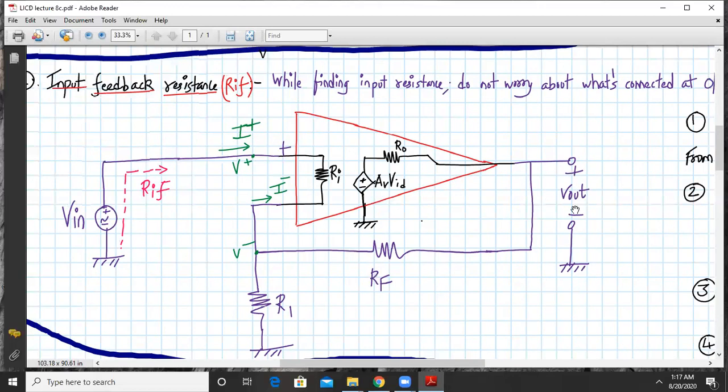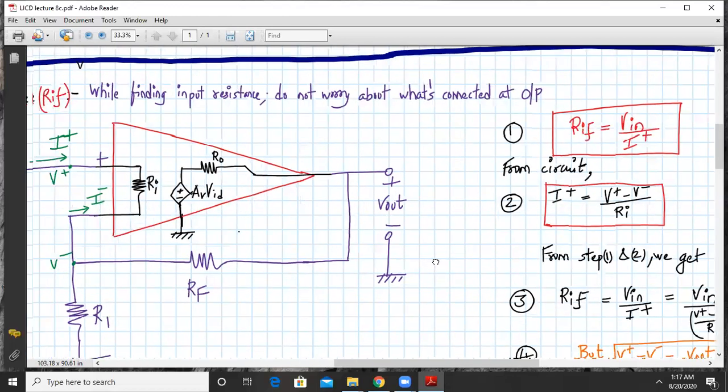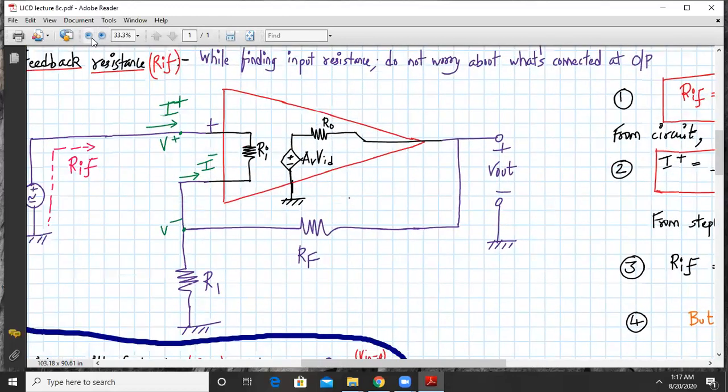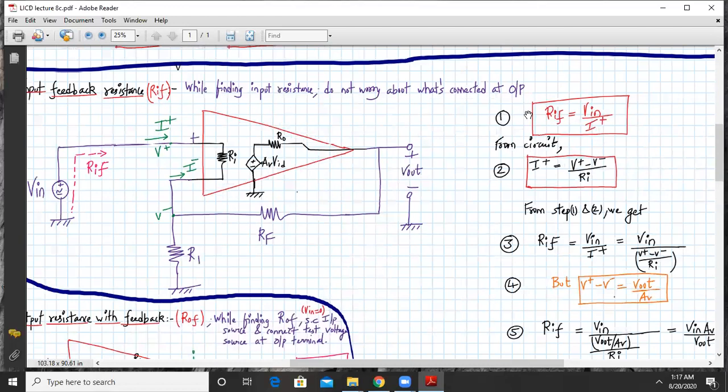So let us start the derivation. From step one, RIF will be equal to V in upon I plus. That's what we have said, that's what we have to derive. So from the circuit, what is I plus?